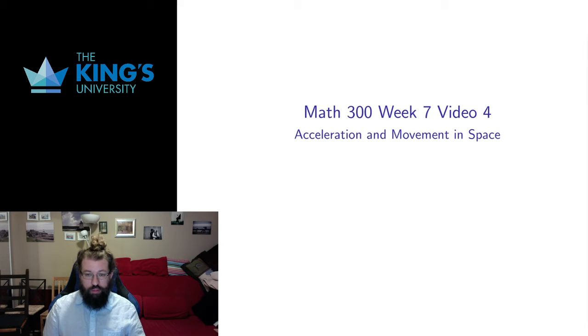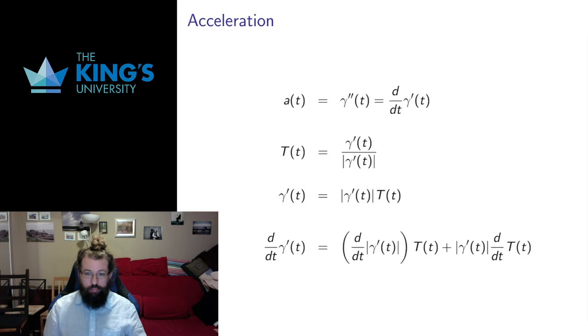Hello and welcome to video 4 for week 7. In the previous videos this week we defined a bunch of properties of the calculus of parametric curves: torsion, curvature, speed, normals, binormals, and tangents, to give a full description of what's going on. I want to apply that description to the problem of acceleration and see if we can use our new tools and terminology to better understand what acceleration means for motion along a parametric curve in three-dimensional space.